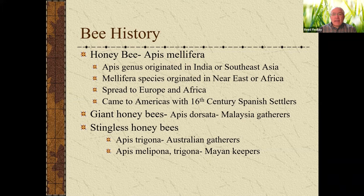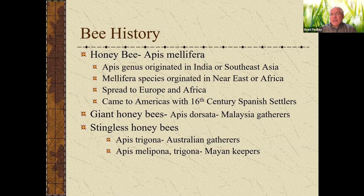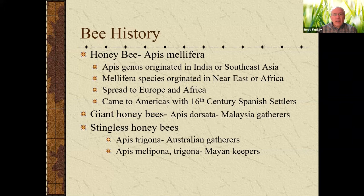Apis mellifera spread to Europe and Africa. That's one of the reasons why they're called the European honeybee — beekeeping really took off in Europe. They came to the Americas with the Spanish settlers in the 16th century. A lot of the native population in the Americas called European honeybees 'white man's flies' because they usually spread ahead of the European colonists. The stingless honeybees I mentioned were very important for the Mayan culture.